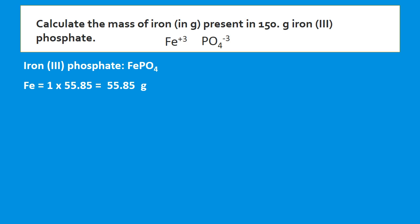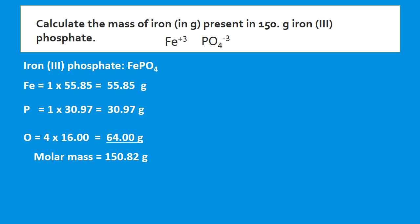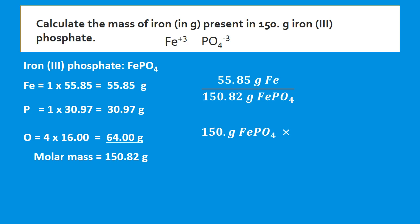We have 1 mole of iron, 1 phosphorus, and 4 oxygens. Adding those gives a molar mass of 150.82 g/mol. We have 55.85 grams of iron in 150.82 grams of iron(III) phosphate — that is our conversion factor. Starting with grams of iron(III) phosphate and wanting grams of iron, we keep the conversion factor as is to cancel grams of iron(III) phosphate, leaving us with grams of iron.